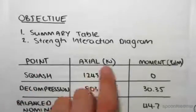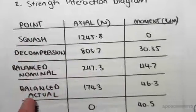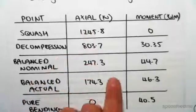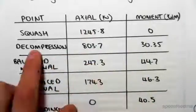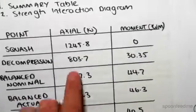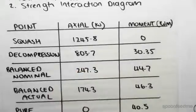So all I've done is I've taken the axial load and the moment for each of our points - squash load, decompression, balance nominal, balance actual, and pure bending. Here's all the corresponding axial loads and moments. At the squash load there's zero moment, and at the pure bending there's zero axial, and all the other forces and moments we found in previous videos. So that's a table summarizing everything.